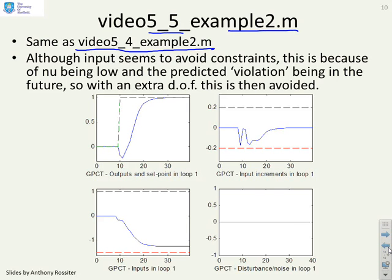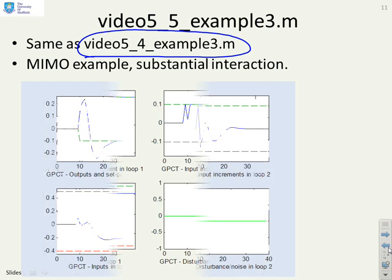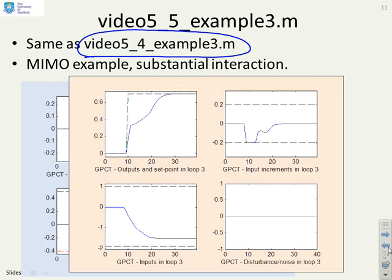We again emphasize the point that these inputs don't meet constraints because the predicted violation was in the future, and when you add the extra degree of freedom each sample, that is then avoided. Finally, video 5.5 example 3 is the multivariable example with substantial interaction. But again, we've got the nominal case with no uncertainty, so you should get the same responses as in the previous video.